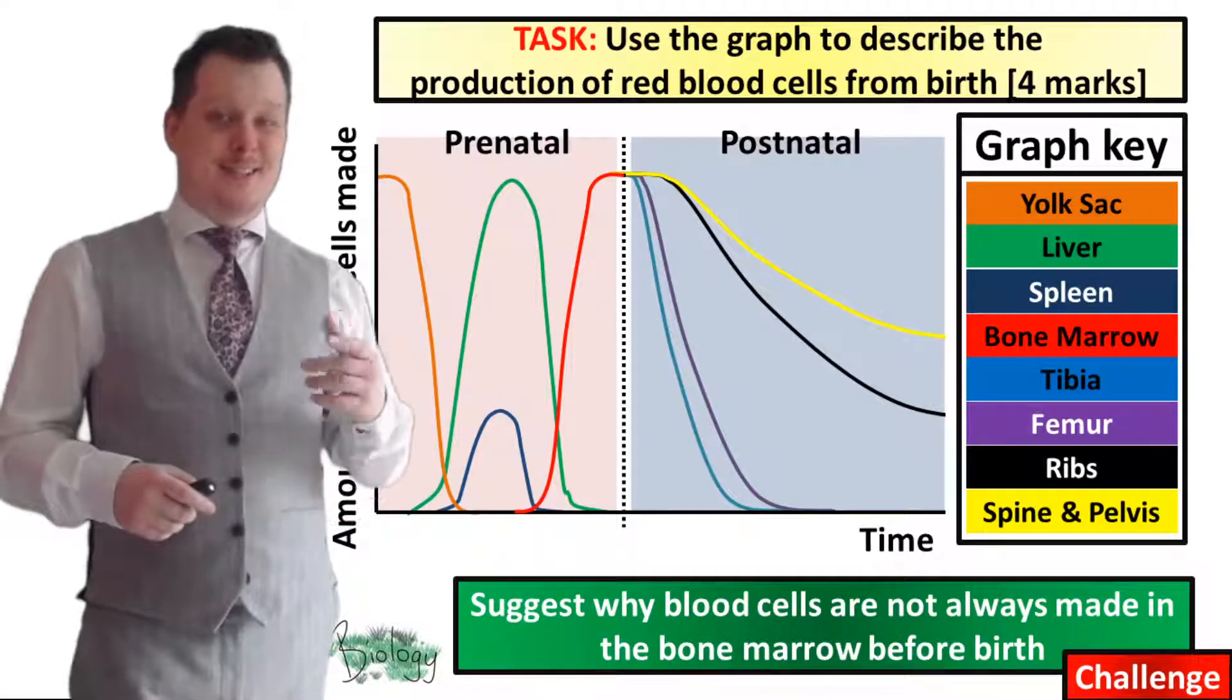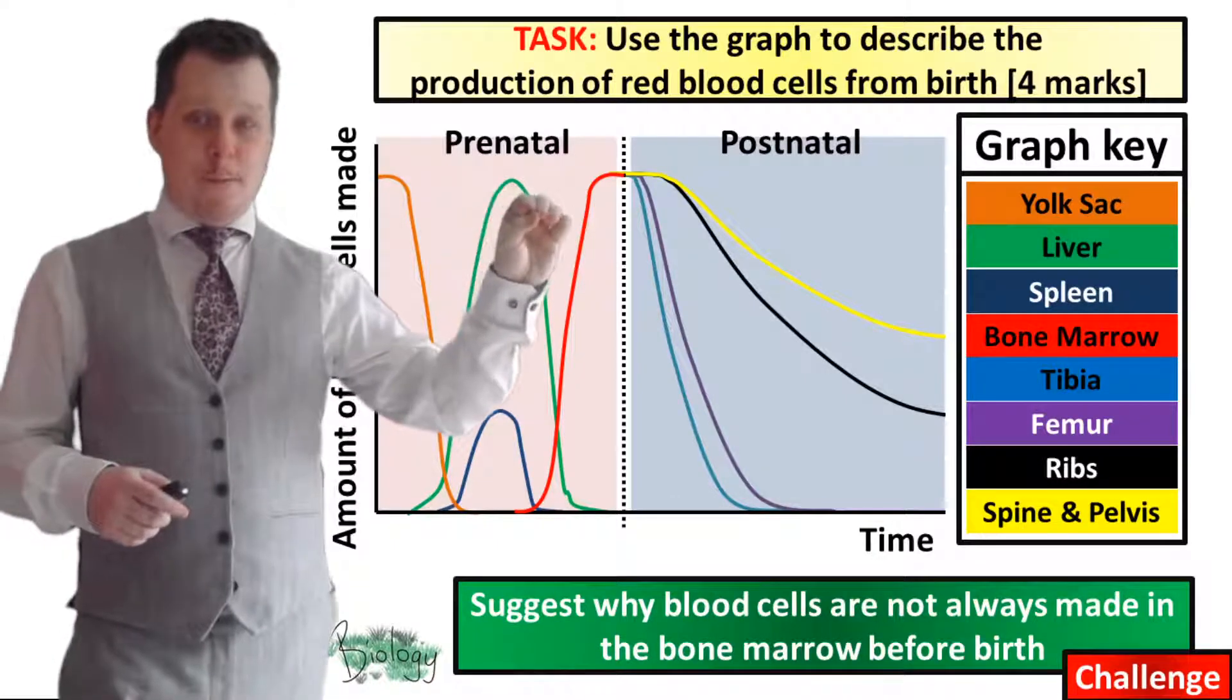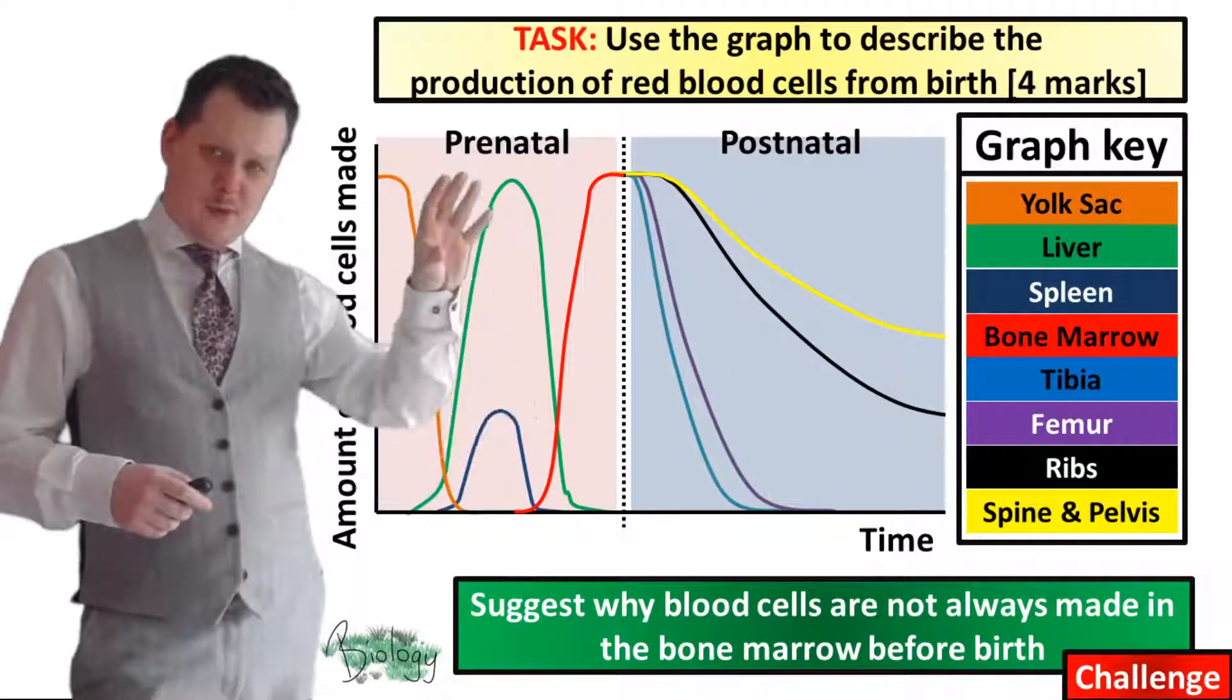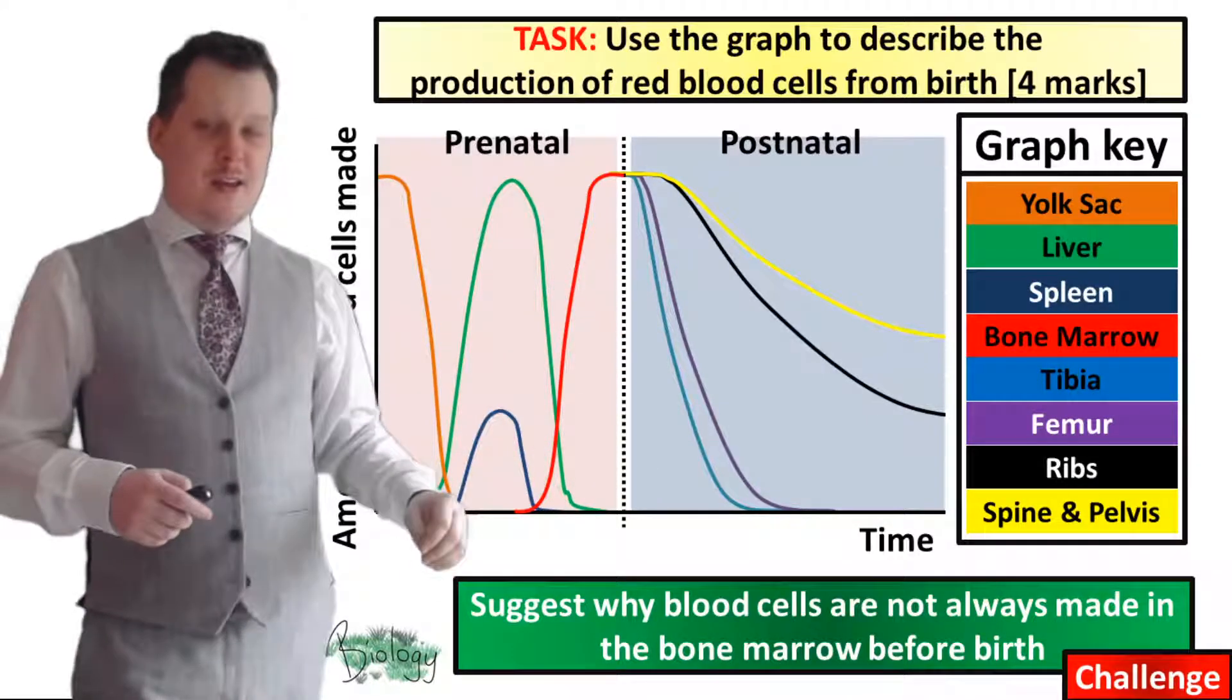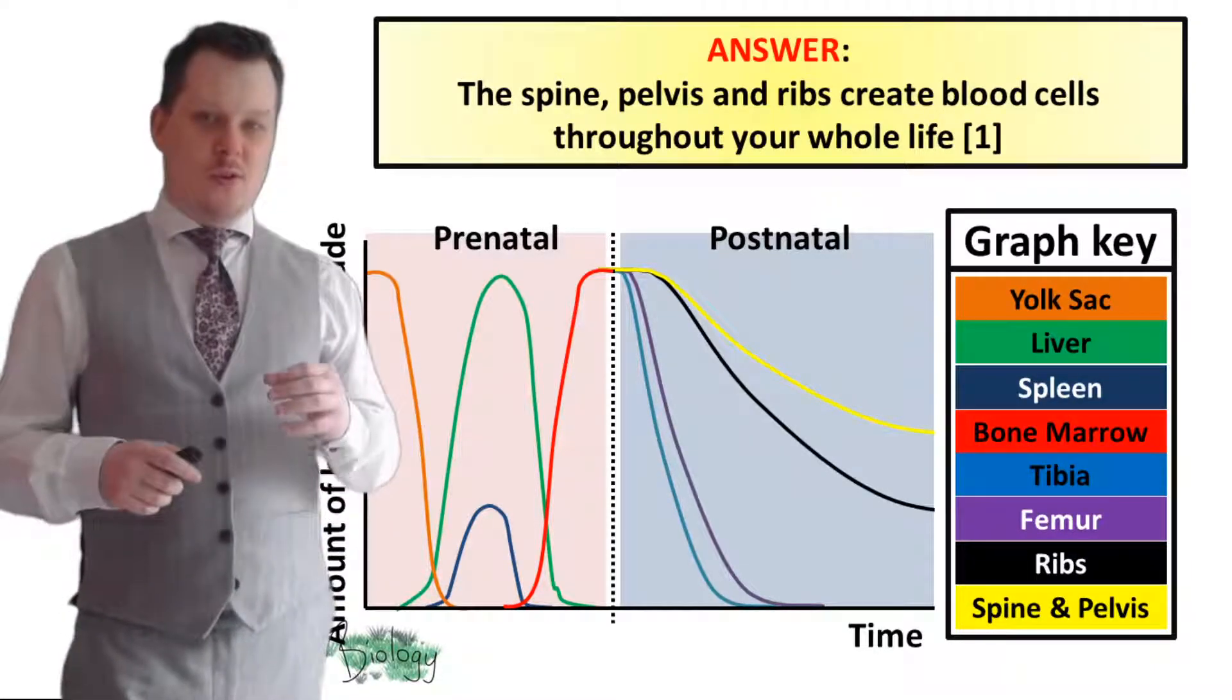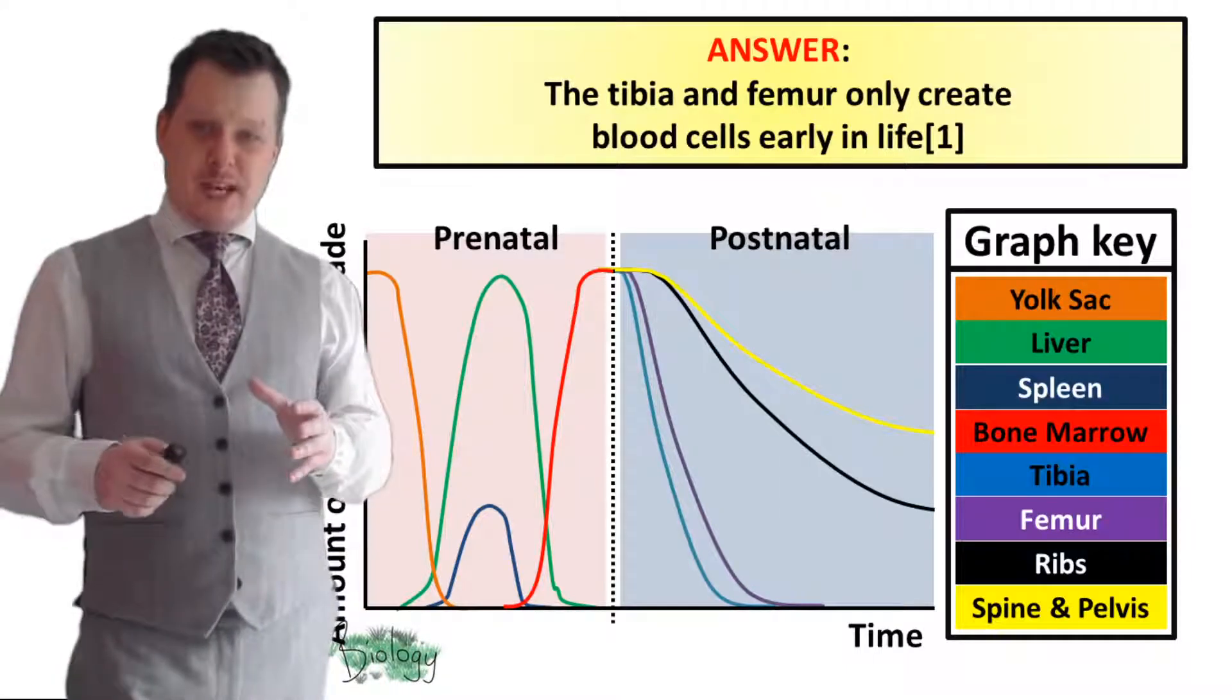Okay are we all finished? So this question focuses on the production of red blood cells from birth. So we're only interested in this postnatal section of the graph. We're not interested in the prenatal section. It is from birth. So four things we need to state in order to get these four marks. The spine, the pelvis and ribs create blood cells throughout your whole life. The tibia and femur only create blood cells in early life.